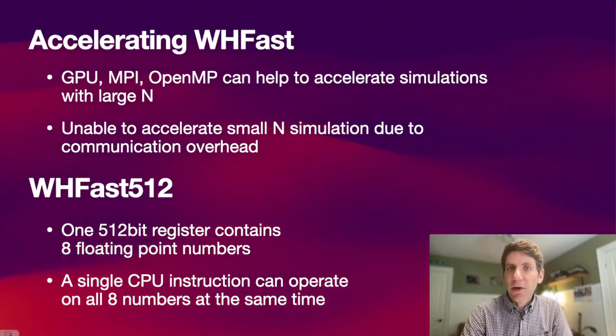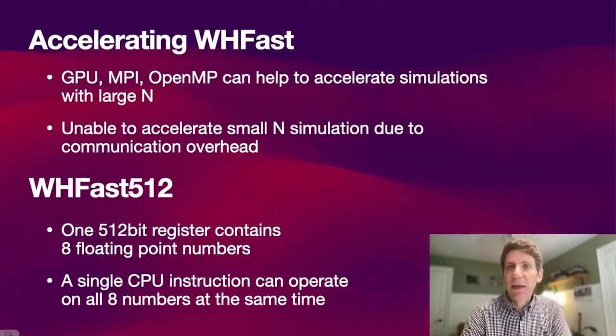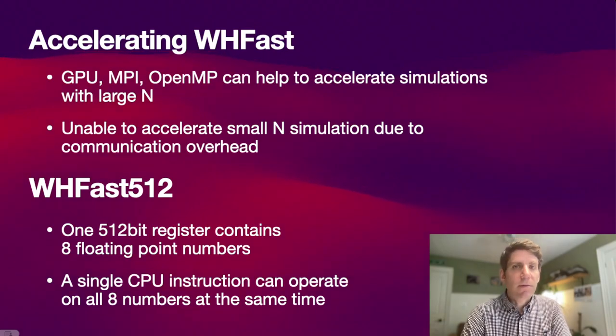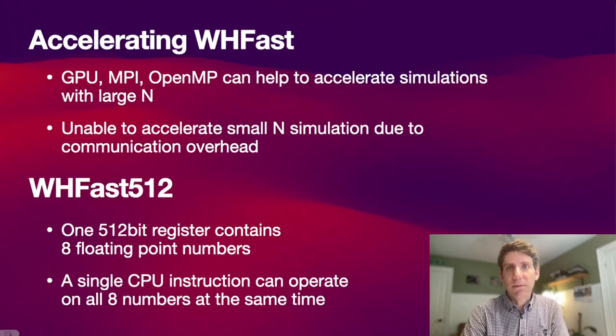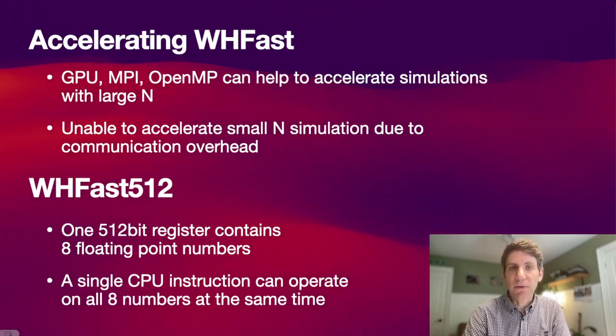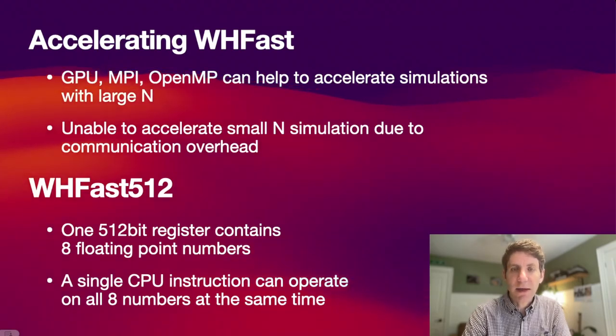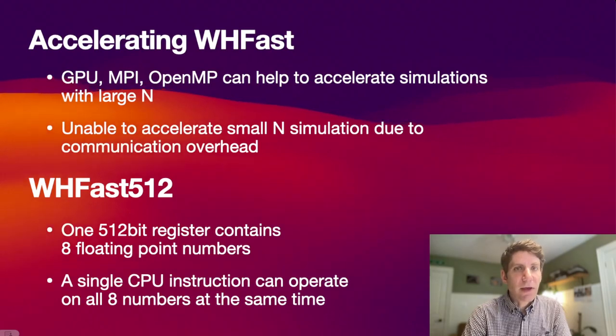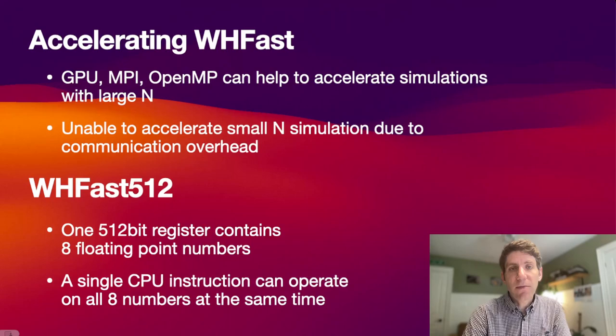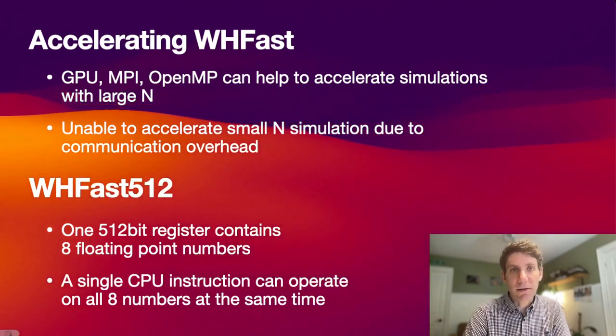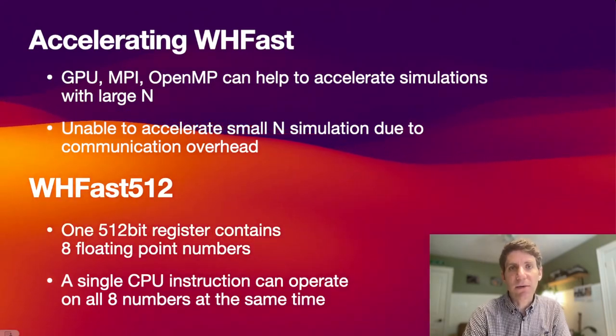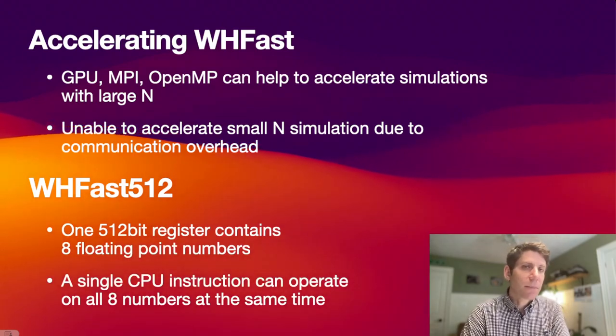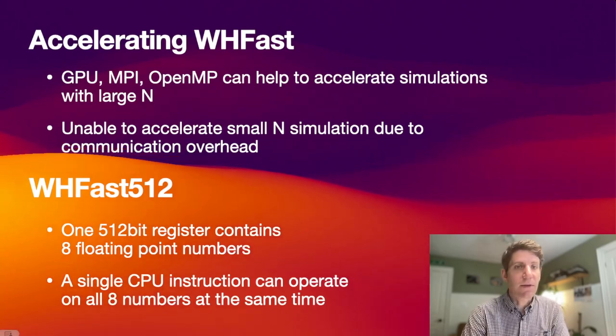Now, accelerating a Wisdom-Holman integration using a GPU, MPI, or OpenMP can be tricky. It might help to accelerate simulations with a large number of particles, or you might be able to simulate multiple simulations in parallel. What is very difficult to achieve is to accelerate one N-body simulation with a small number of particles. Whether you run on a GPU or in a shared memory system, you will have a communication overhead. Because each individual Wisdom-Holman part is relatively short, you need to communicate a lot, many times per second. This will slow down your simulation in such a way that having multiple cores might not help you. It might slow you down instead.